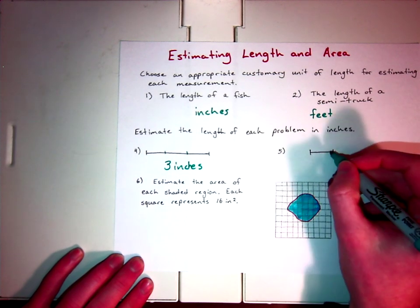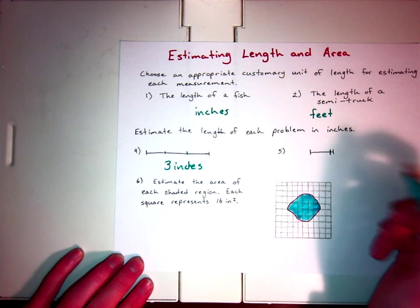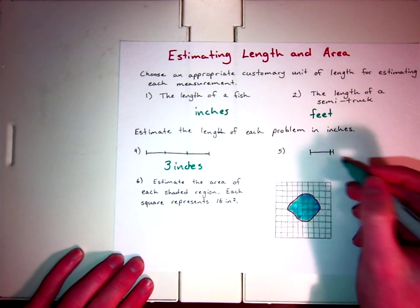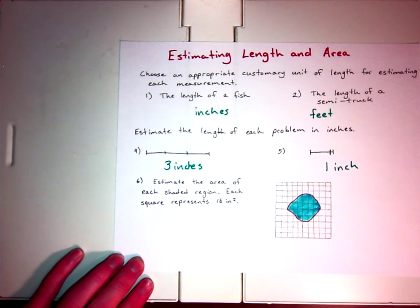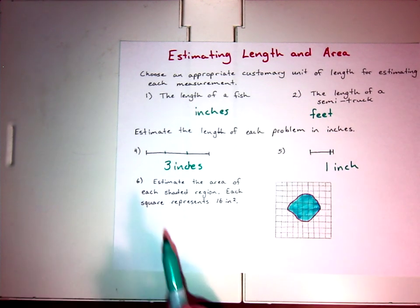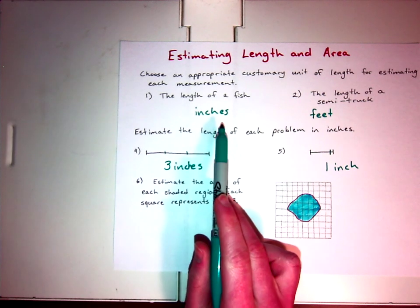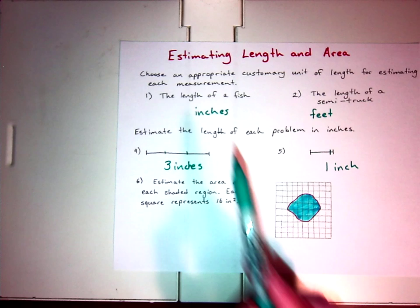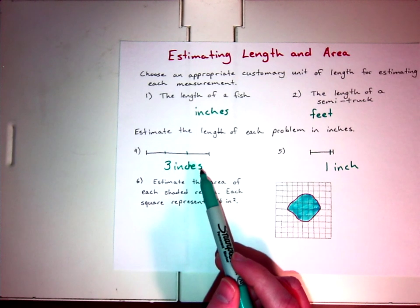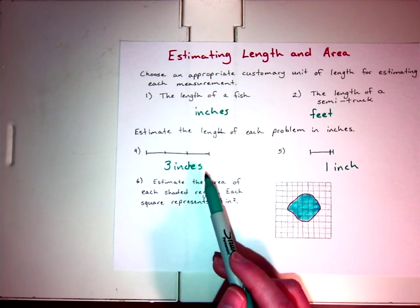For number five, a similar thing. I think probably about this is an inch. But if I'm estimating and they want a whole number, I'm going to say it's closest to one inch. So I've got three inches, I've got one inch. These are asking us to show what would be the best term of measurement to use. For this one, just using our estimating skills, we've worked with inches for years, so you kind of have an idea of what an inch should look like.